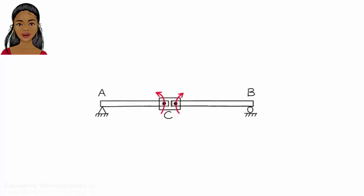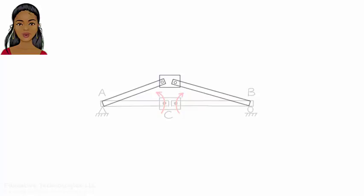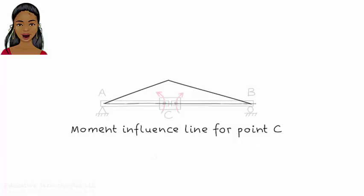Here the hinge is placed at C, meaning we want to draw the moment influence line for point C. How does the beam displace as a result of adding the hinge and moments at point C? The right segment wants to turn clockwise because of the clockwise moment placed at C, and the left segment wants to turn counterclockwise. For CB to turn clockwise, the left end of the segment has to move up. Similarly, for AC to turn counterclockwise, the right end of the segment has to move up. This displaced shape of the beam is the moment influence line for point C. Keep in mind that the hinge and moments at C are not real — they are placed there as part of the conceptual method for drawing the influence line.